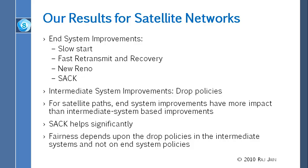The third conclusion was that fairness depends upon the drop policy — routers can help with fairness, but not so much with throughput. The simple drop policy is called tail drop: if the queue is full, all arriving packets are dropped. That is unfair because somebody with a window size of 15,000 might have all 15,000 packets dropped, while another sender who just arrived finds the queue empty and gets all 15,000 through. Simulations showed that if traffic is bursty, tail drop is unfair. The opposite would be head drop or random drop.